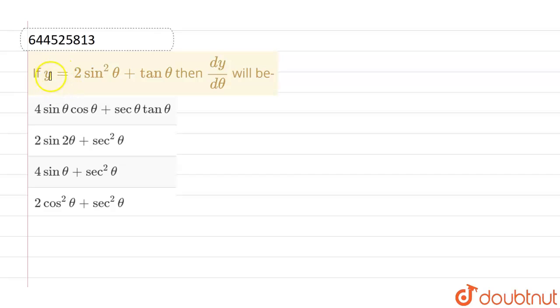Hello everyone. If we talk about this question, the given question is: if y equals 2sin²θ plus tanθ, then dy over dθ will be, and these are the given options.